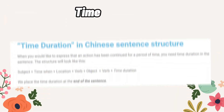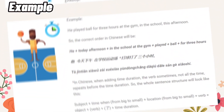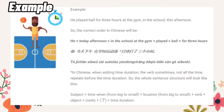For time duration in Chinese sentence structure, when you would like to express that an action has been continued for a period of time, you need time duration in the sentence. The structure will look like this: subject plus time when plus location plus verb plus object plus verb plus time duration. We place the time duration at the end of the sentence. For example: 'he plays ball for 3 hours at the gym in the school this afternoon.' The correct order in Chinese will be: he plus today afternoon plus in the school at the gym plus play plus ball for 3 hours.